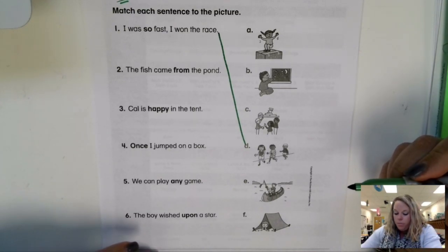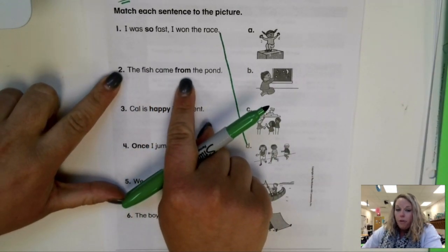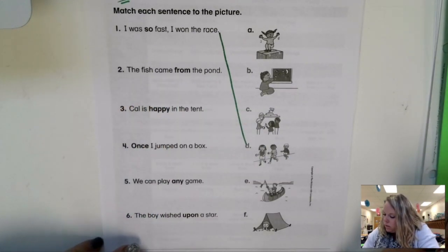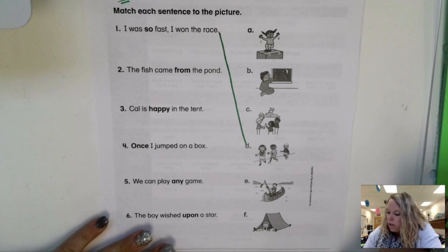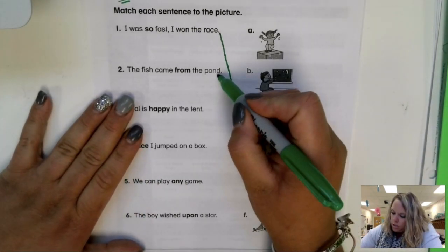Okay, number two. The fish came from the pond. The fish came from the pond. You find the picture of a fish in the pond. Mm-hmm. I did too. Goes to E.